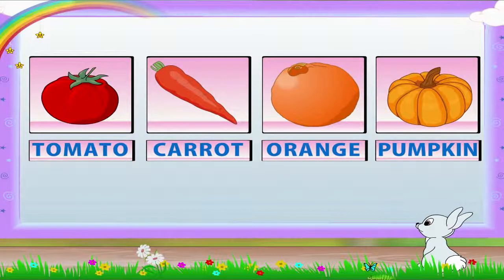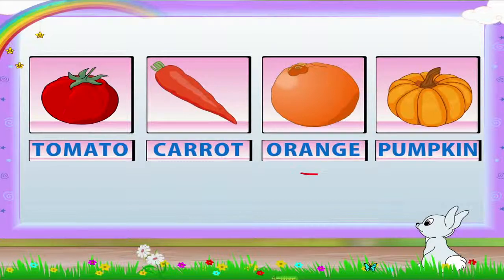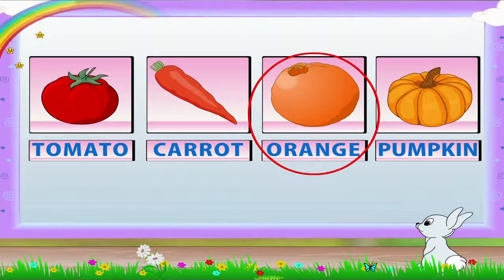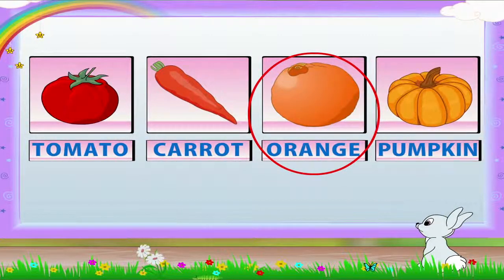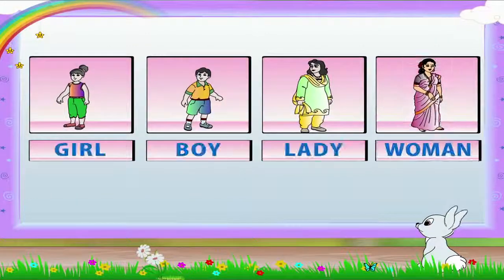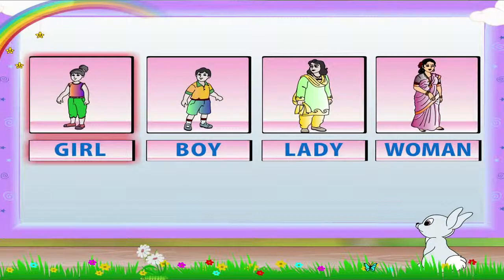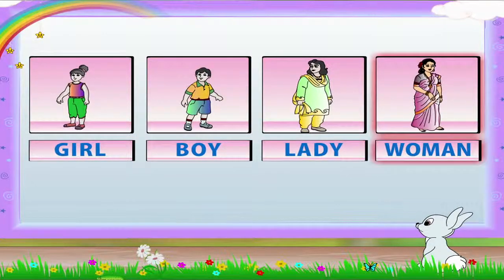Next we have tomato, carrot, orange, and pumpkin. The odd one is - correct - orange! It is a fruit. Tomato, carrot, and pumpkin are vegetables. Look at this group: girl, boy, lady, woman.